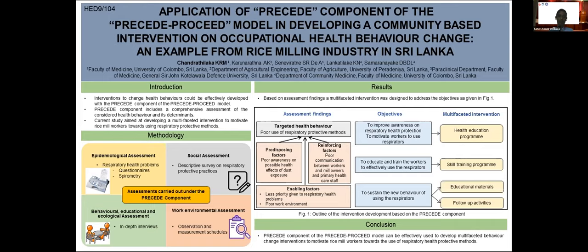The predisposing factor was poor awareness of the possible respiratory health effects due to dust exposure. The enabling factors were low priority given to respiratory health problems and poor environment in the rice mills. The reinforcing factors were poor communication between the rice mill workers, the mill owners, and primary health care staff such as the medical and health staff.